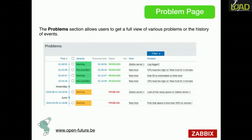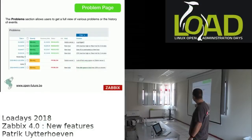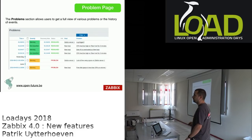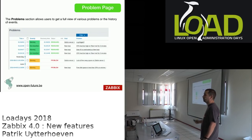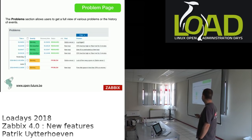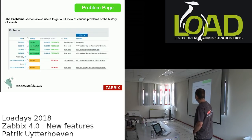There is now a dedicated problem page in Zabbix, which is time-based and gives an overview ordered from latest to oldest problem — configurable as you prefer. You can filter by host group or individual host to see all problems and how many times they occurred, providing a much better overview. This was already introduced in 3.2.